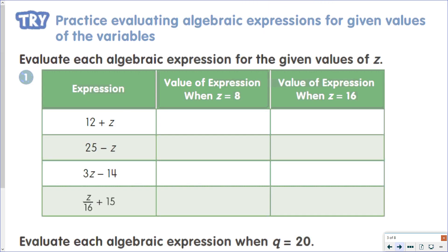So we're going to evaluate each algebraic expression for the given values of Z. So the value of expression when Z equals 8 means we're going to do 12 plus 8, and 12 plus 8 is 20. When Z equals 16, we'll then take 12 plus 16, which is 28. 25 minus Z, so we'd have 25 minus 8, which is 17. And 25 minus 16, which is 9.